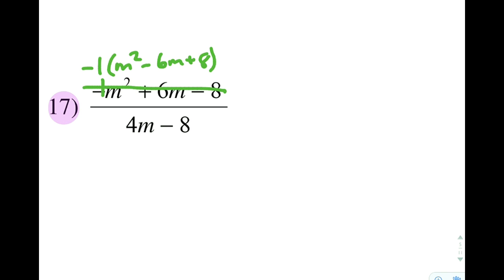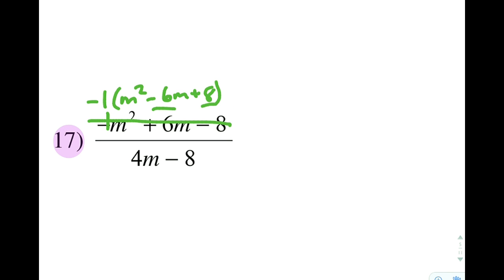I can find two numbers that multiply to 8 and add to negative 6. If I did not do this factoring out of the negative 1, I would not be allowed to do that. So two numbers that multiply to 8: I can have 1 and 8, 2 and 4. 2 and 4 is going to add up to 6. I need it to be negative 6, so I switch both of those signs. And I am going to have m minus 2, m minus 4 as the terms that I factor out.